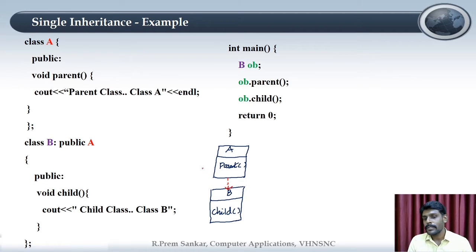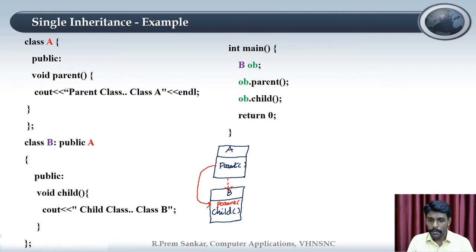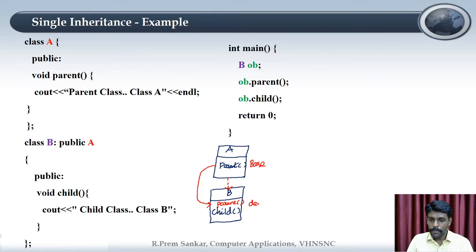Class A is a class, and class B is also a class. Class A has its properties and member functions. Parent is a class. Class B inherits class A's properties — this is the parent class and child class relationship.